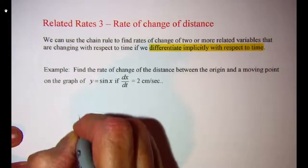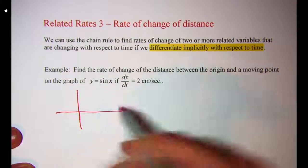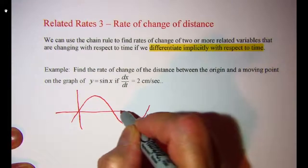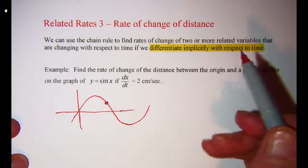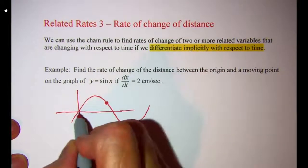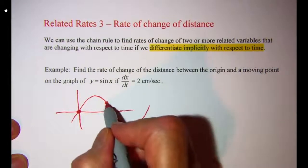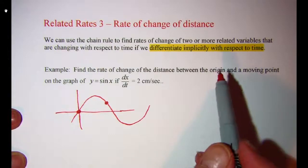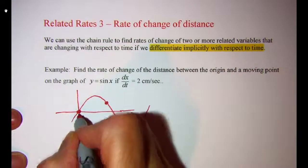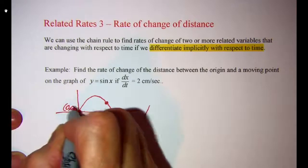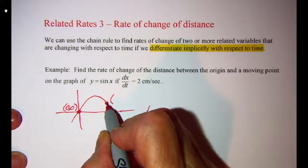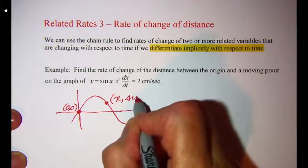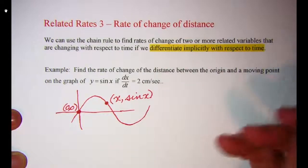So what we have is a point moving along the graph of sine x, and we want to know the rate of change of the distance between the origin and the moving point. We need to use our distance formula, and that'll give us our relationship between the variables. Our point at the origin is (0, 0), and the coordinates of the point moving along the graph are x and sine x.